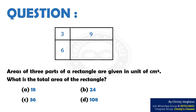Question: Areas of 3 parts of a rectangle are given in units of cm². What is the total area of the rectangle? Options: A. 18, B. 24, C. 36, and D. 108.